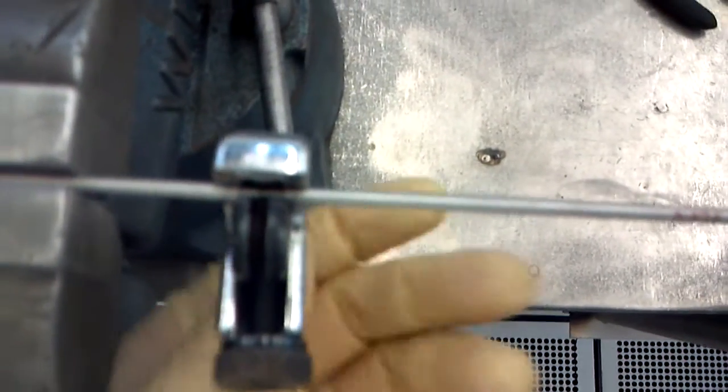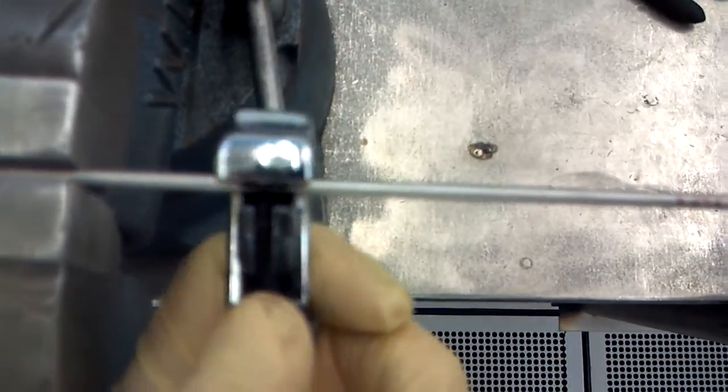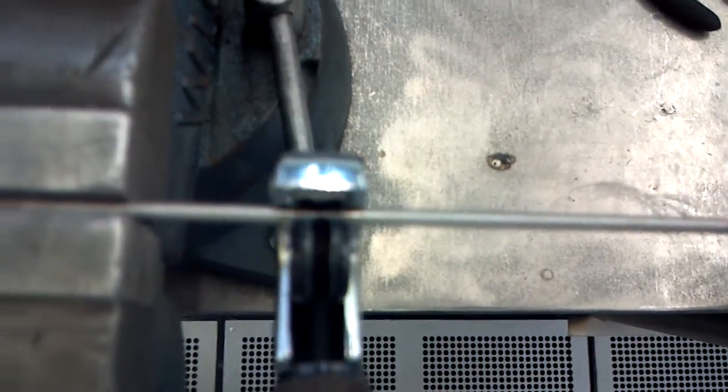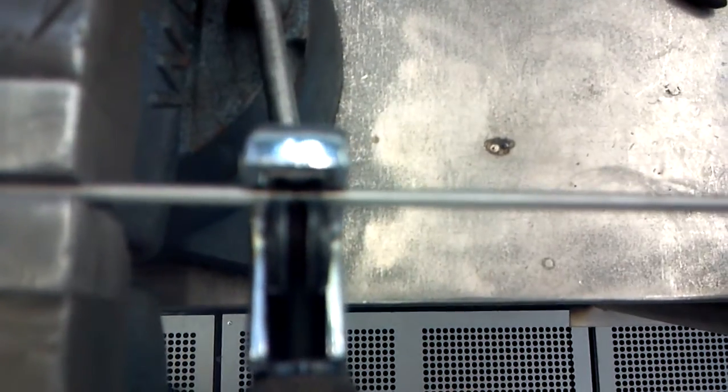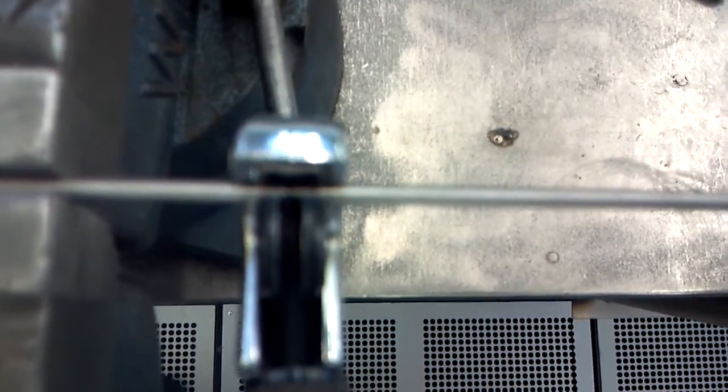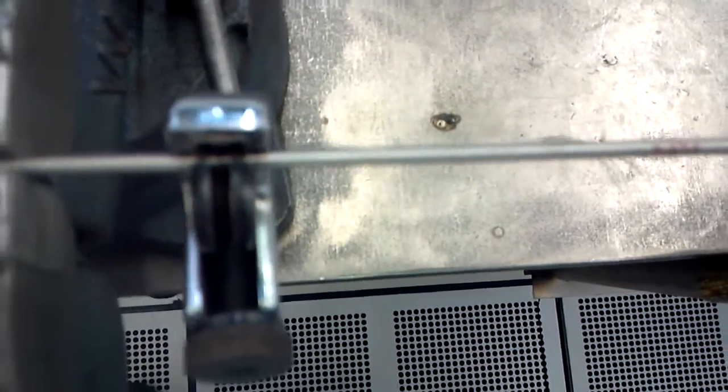These are just little tiny baby pipe cutters. It creates less particles as we're cutting it apart because this is all high-purity stuff, and we have to keep it clean.